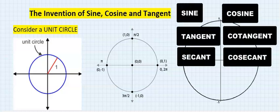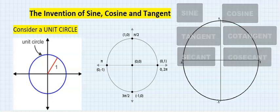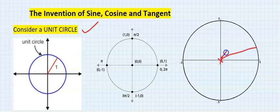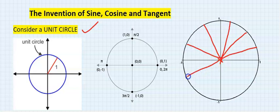How were sine, cosine, tangent, secant, cotangent, and cosecant invented and introduced into mathematics? How were they derived? Let's consider a unit circle. A unit circle is a circle whose radius is length one. Considering the center of a unit circle, any line you draw from the center to touch the outer edge of the circle must have length one.